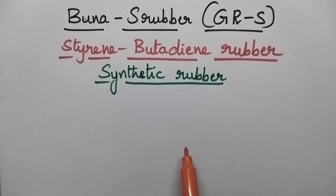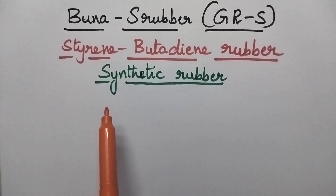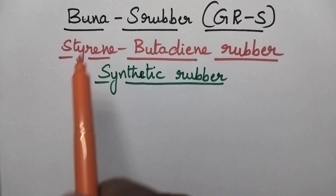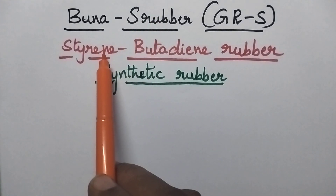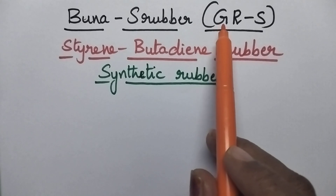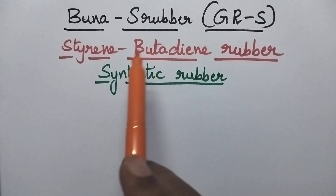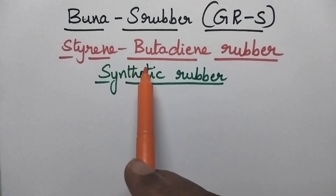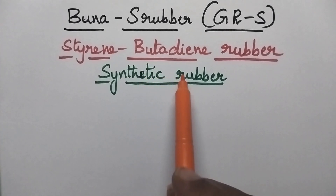Hello students, welcome back to my channel. In this video I am going to discuss in detail about the preparation, properties and applications of Buna S rubber, which is also known as styrene-butadiene rubber. It is the most important type of synthetic rubber.